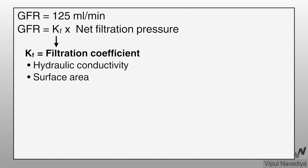Filtration coefficient is determined by glomerular capillary wall hydraulic conductivity — or in simple words, its permeability — and the surface area available for glomerular filtration. The higher the conductivity and the larger the surface area, the higher will be the GFR.